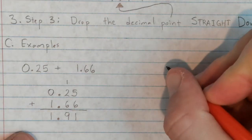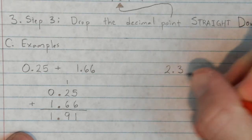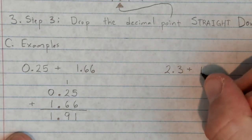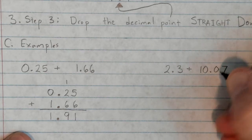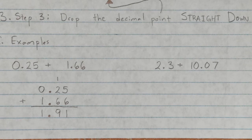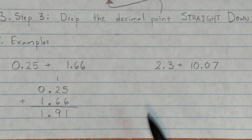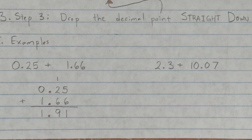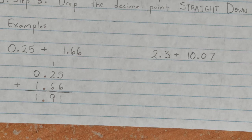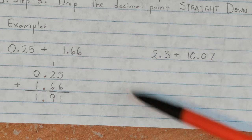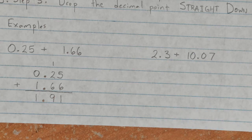Let's do one more example: two and three tenths plus ten and seven hundredths. This one's a tiny bit trickier. I'm going to let you try this one on your own — go step by step. Write the problem vertically, line up the decimal points first. If you line up the decimals correctly, all place columns should be lined up. Add, carry if needed, then bring the decimal point straight down for your answer.